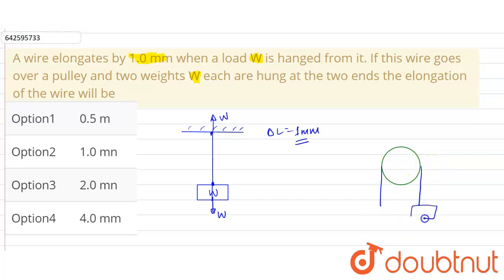So the tension in the wire on both sides will be W. The tension will be W, or what we can say is the wire is experiencing a tension of W in the second case, and in the first case it is also experiencing the tension of W.